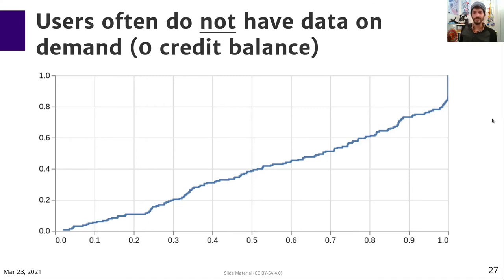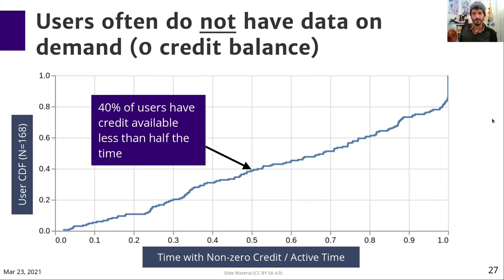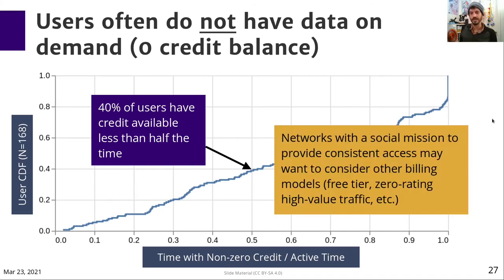Beyond purchasing data intermittently, users often don't even have a credit balance stored in the network, meaning they don't have the ability to purchase data on demand. When users don't have a credit balance, they have to go find a physical reseller and hand over cash. This plot shows the time with non-zero credit for each user as a ratio of their active time. We can see that 40% of users have credit available less than half the time. Networks with a social mission to provide consistent access — maybe for emergency services or communication with friends and family — may want to consider billing models besides prepaid.